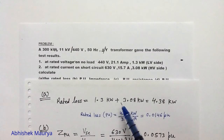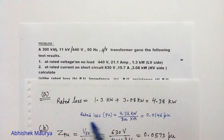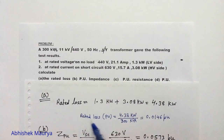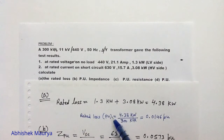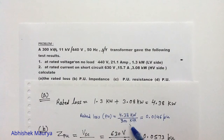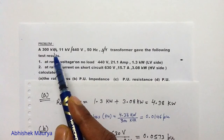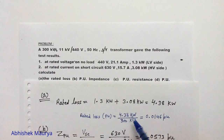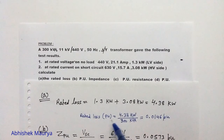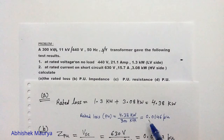This is the answer of the first part of the question. The total rated loss is 1.3kW + 3.08kW = 4.38kW. If you want to find the rated loss in per unit, according to the definition of per unit, you write the actual value divided by the base value. The base power is 300kVA. So 4.38kW divided by 300kVA gives the rated loss in per unit as 0.0146 per unit.